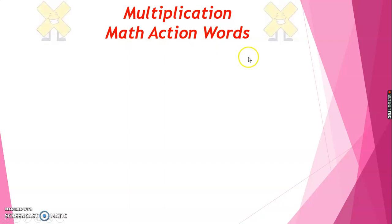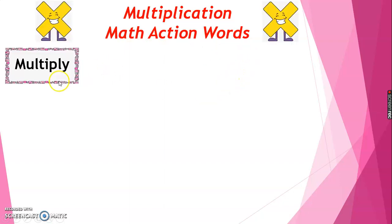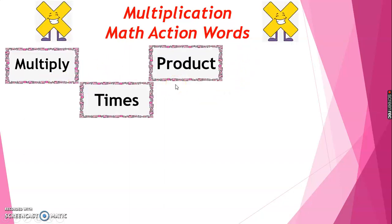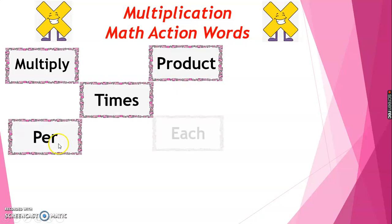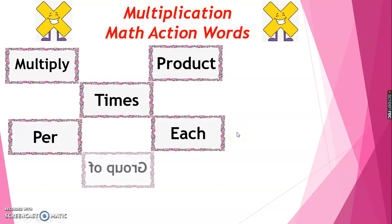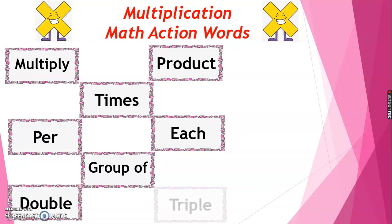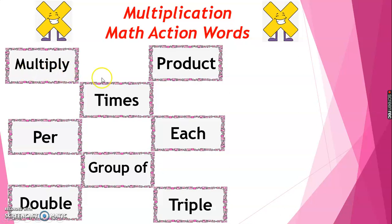Multiplication math action words: multiply, product, times, per, each, group of, double, triple. Let's read all together — multiply, product, times, per, each, group of, double, triple.